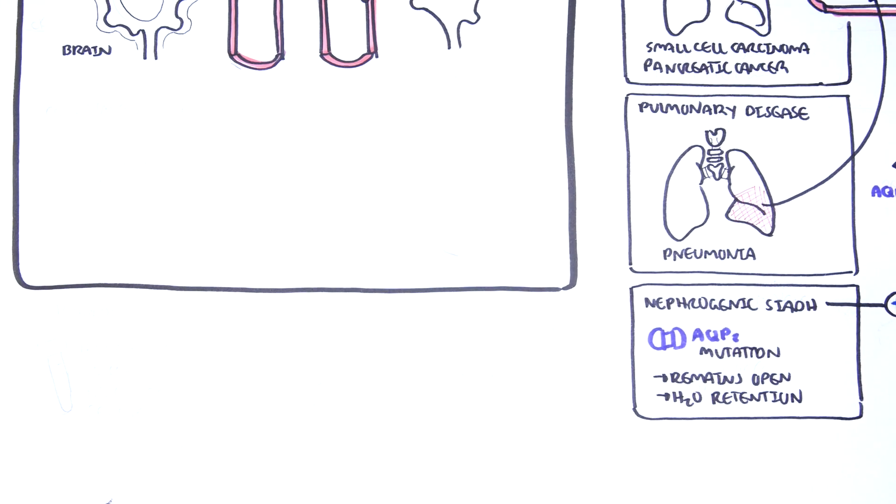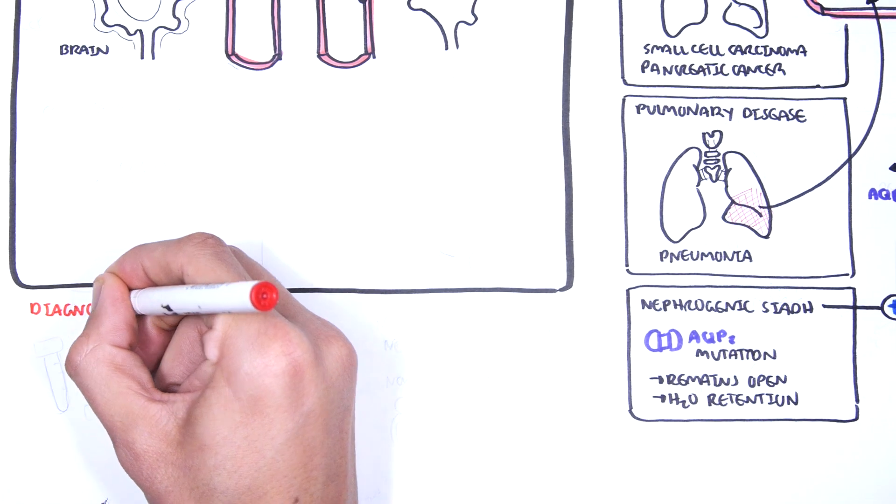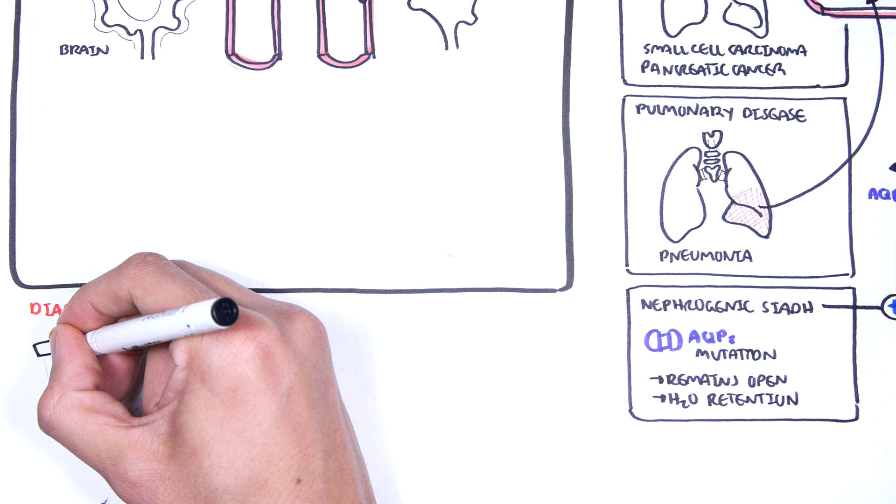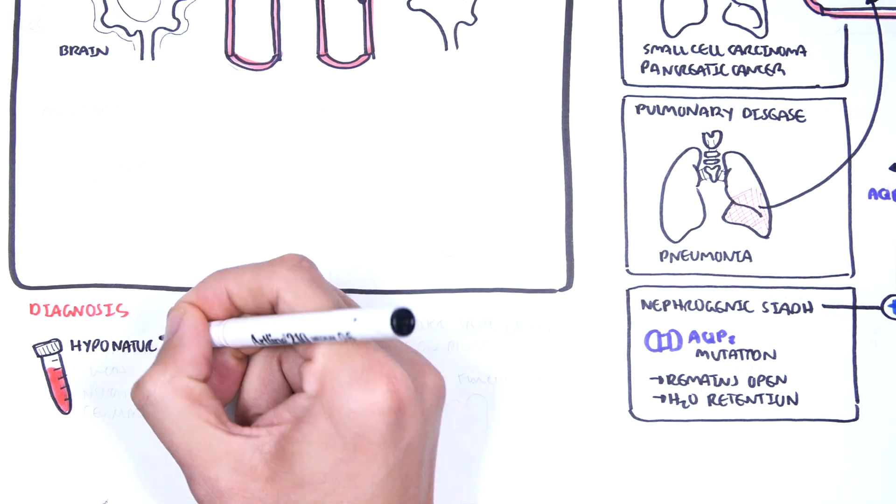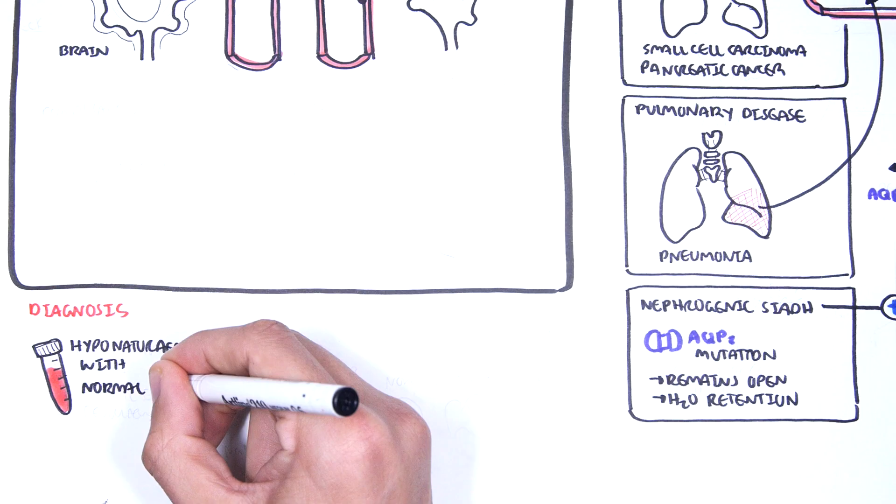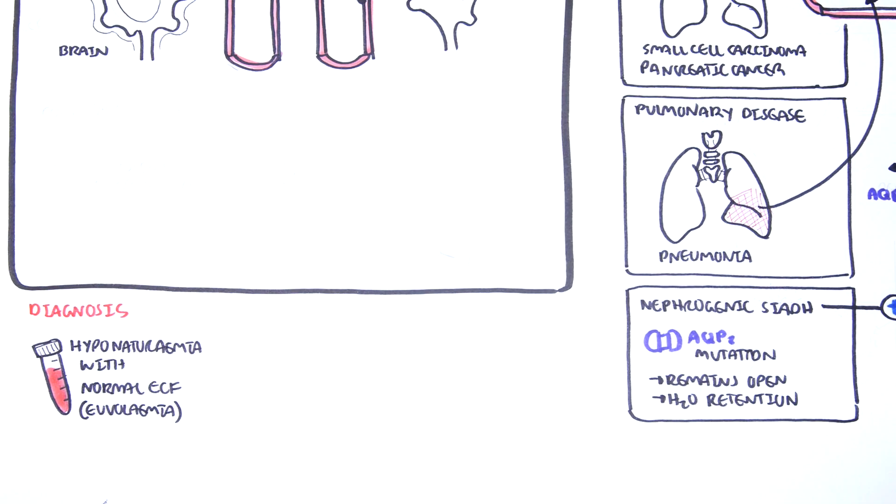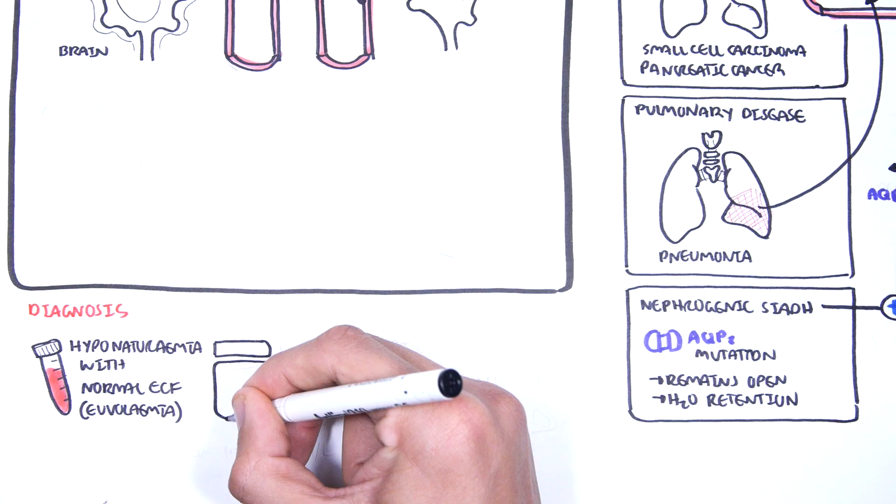Diagnosing SIADH requires a set criteria and ruling out other causes of hyponatremia. So let's look at some criteria to diagnose SIADH. One, you need to have hyponatremia with a normal extracellular fluid state, so a euvolemic state.